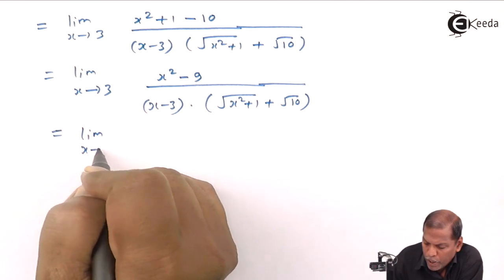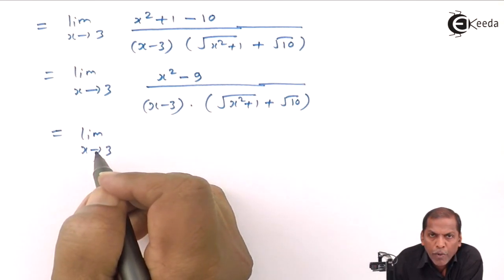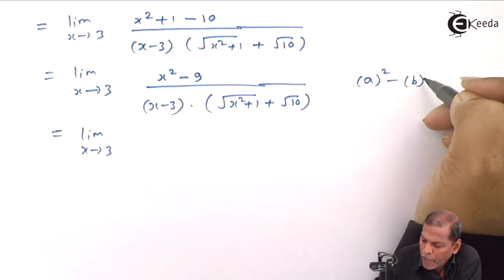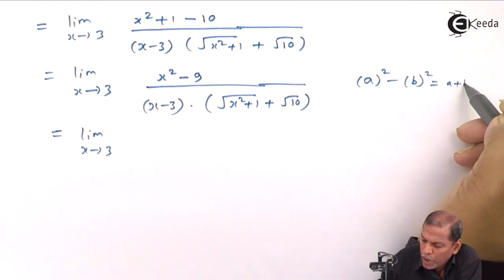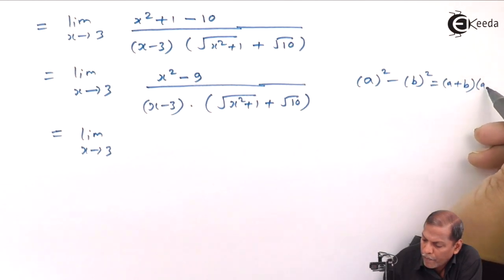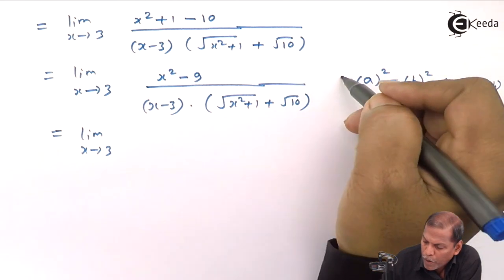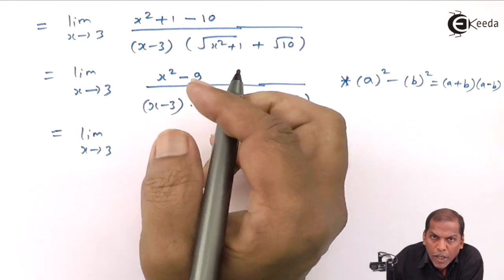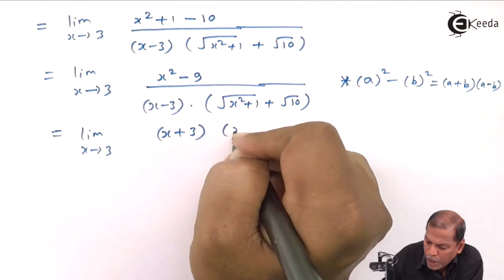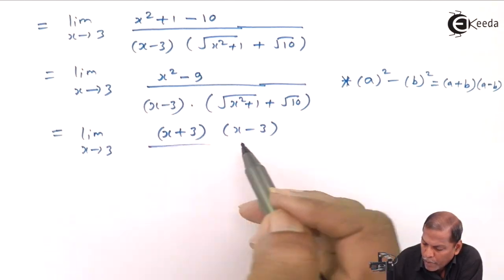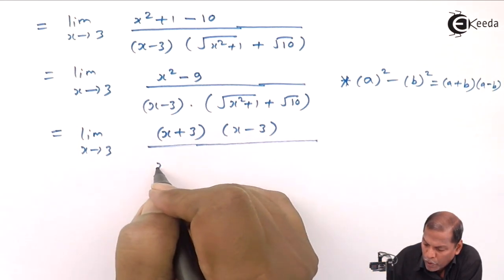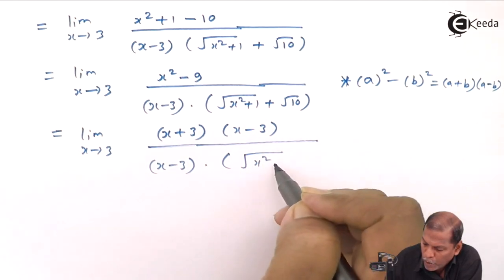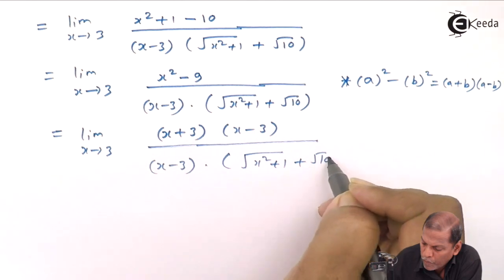Now here the numerator is again of the type a squared minus b squared, so by using that formula — a squared minus b squared gives a plus b in one bracket and a minus b in the second bracket — x squared minus 9 can be factorized as x plus 3 into x minus 3. Then the whole thing is divided by x minus 3 into square root of x squared plus 1 plus square root of 10.